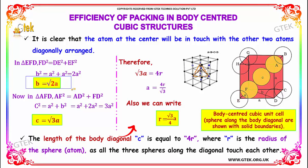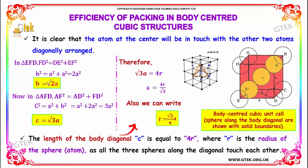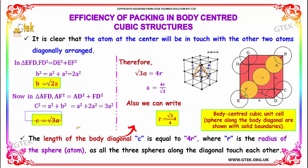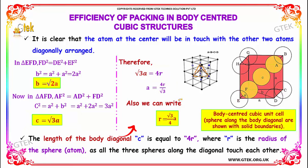In another triangle EFD, you get AD² + FD² = AF², so C² = A² + B². Since B² = 2A², substituting gives C² = A² + 2A² = 3A², therefore C = √3 · A.